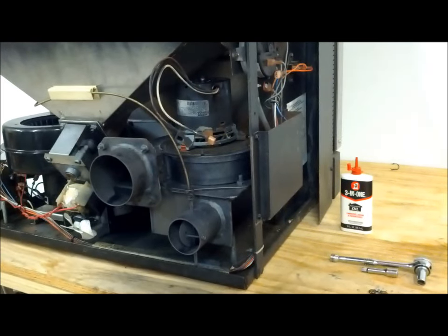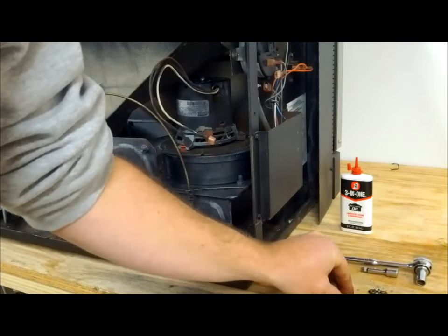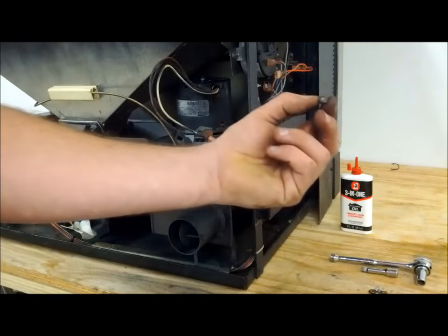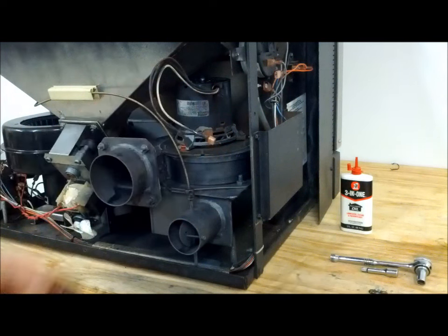Once you have the fan motor dropped back onto those six bolts, take those six 11/32 nuts and reinstall them with your fingers. Then take your quarter inch ratchet and 11/32 socket and tighten them down.